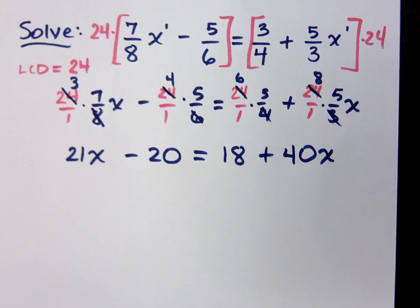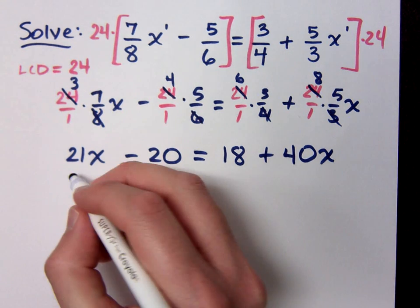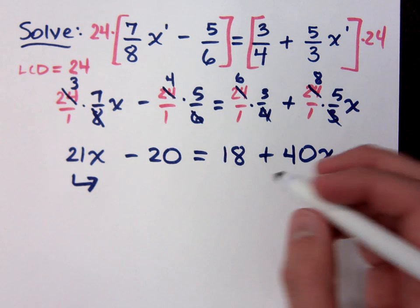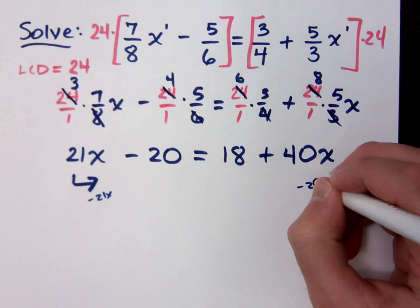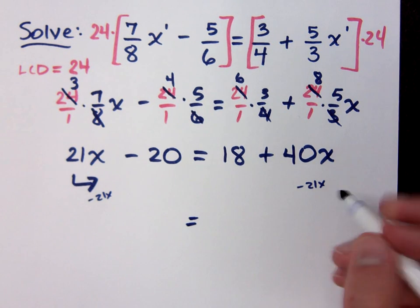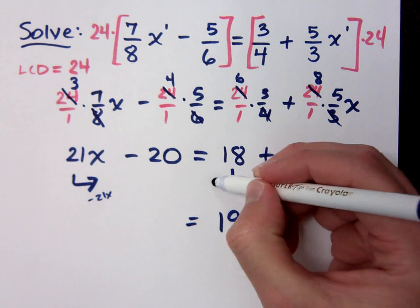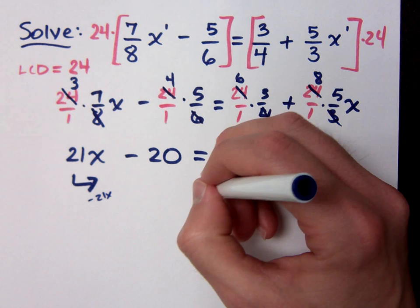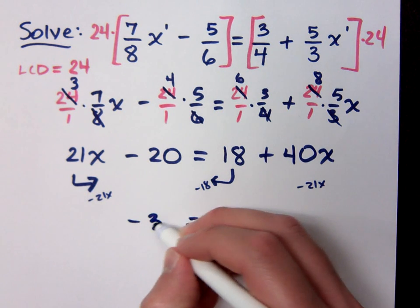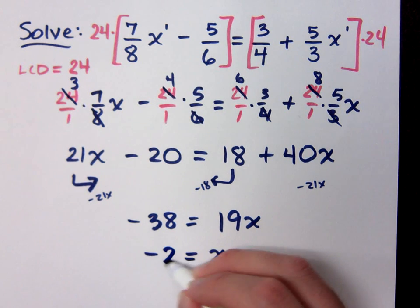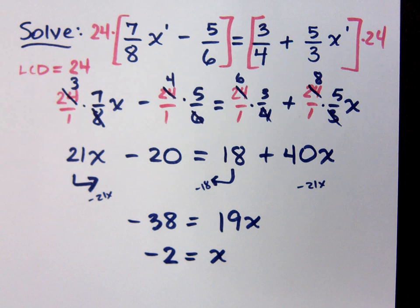Do you all agree with that? Alright, get x's on one side, constants on the other. Where do you want to move stuff? x's to the right — so if I move this guy over, that's going to be a negative 21. So we end up with 19x. Move the constant to the left, that's a negative 18, so you get negative 38. Negative 38 divided by 19 is negative 2.